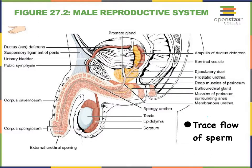So a quick review of how the sperm cells travel: they are made in the testes, they then mature in the epididymis, they then travel up the vas deferens, the ampulla of the vas deferens, the ejaculatory ducts, and then out of the urethra.